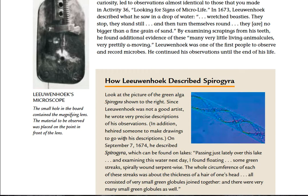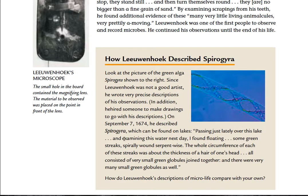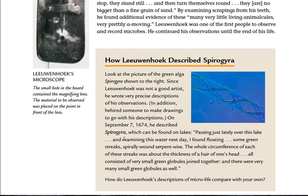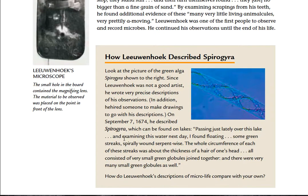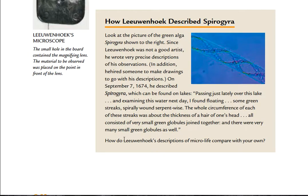On September 7th, 1674, he described spirogyra, which he found on lakes: 'Passing just lately over this lake and examining this water the next day, I found floating some green streaks, spirally wound serpent-wise. The whole circumference of each of these streaks was about the thickness of a hair of one's head. All consisted of very small green globules joined together, and there were very many small green globules as well.'